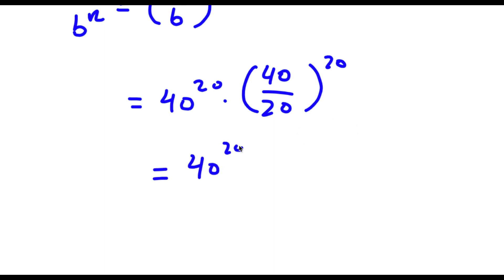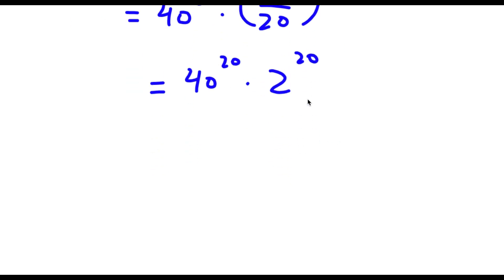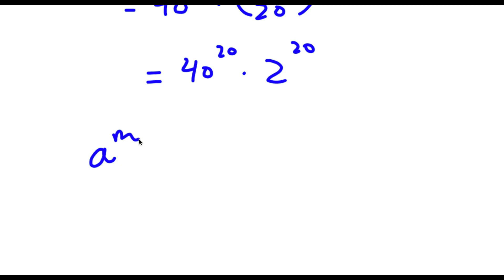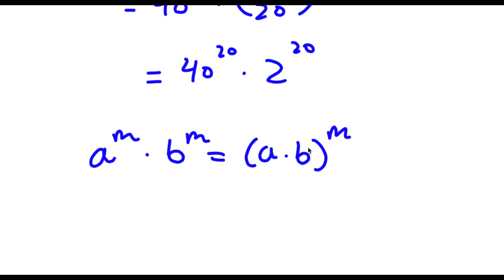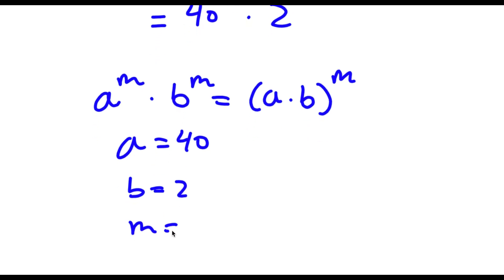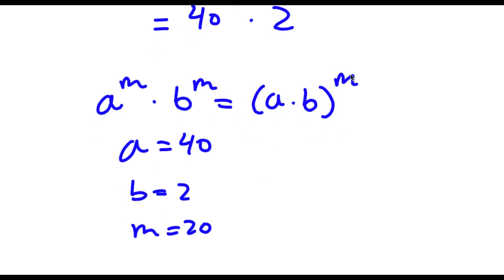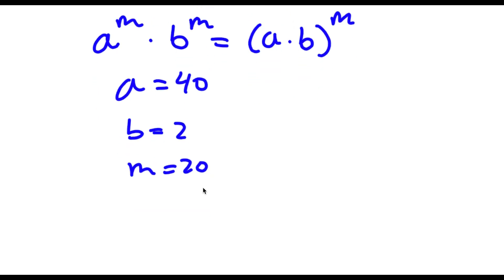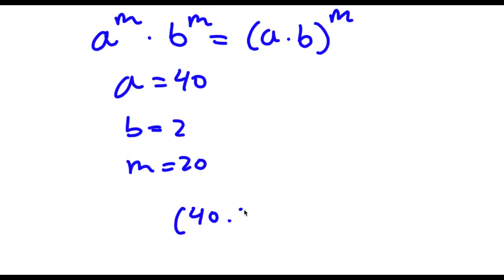So now I have 40 to the power of 20 times 2 to the power of 20. Now, if I have something in the form a to the power of m times b to the power of m, this can be written as (a times b) to the power of m. So in this case, a is equal to 40, b is equal to 2, and m is equal to 20. So I have (a times b) to the power of m, which is (40 times 2) to the power of 20.